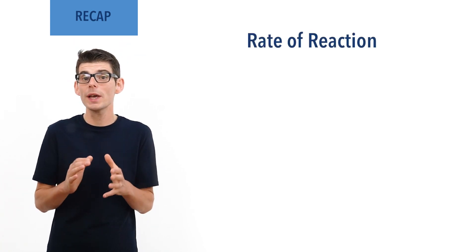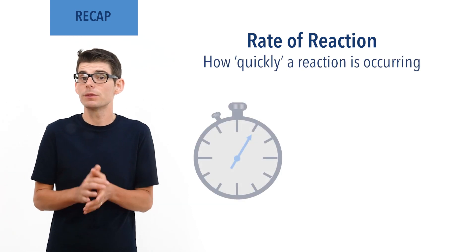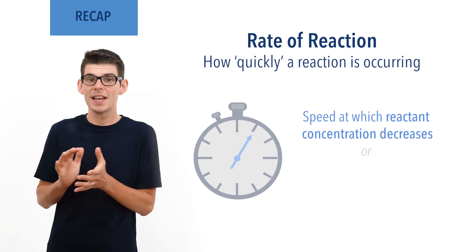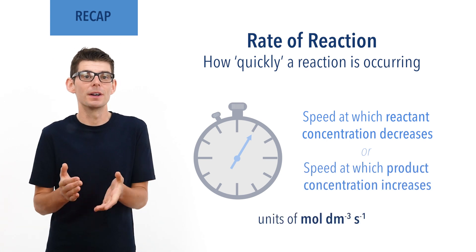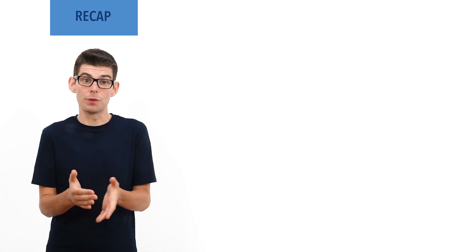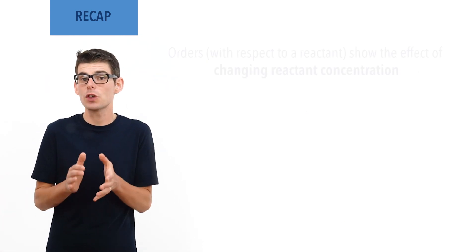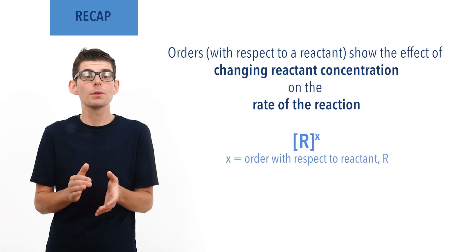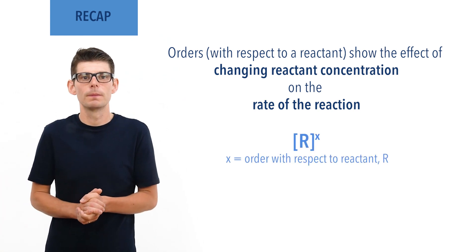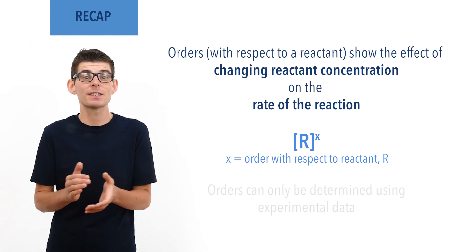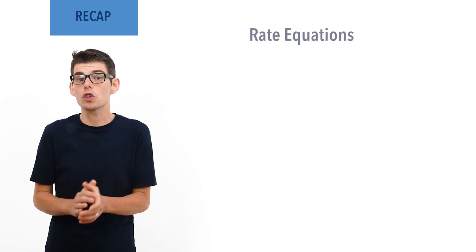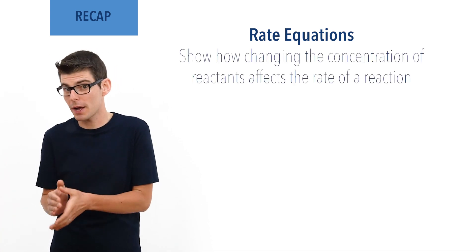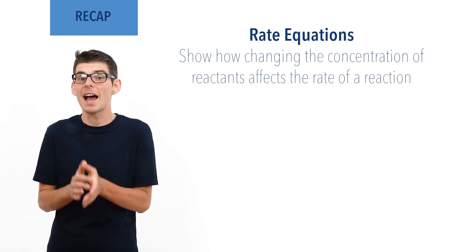Rates of reaction describe how quickly reactions are occurring. They can be measured in terms of the speed at which reactant concentration decreases or the speed at which product concentration increases, giving the units mole per decimetre cubed per second. Orders of reaction with respect to a particular agent show the mathematical effect of changing concentration on the rate of reaction. They are written as a small number as a superscript to the reagent in square brackets representing concentration. Orders of reaction can only be determined using experimental data.